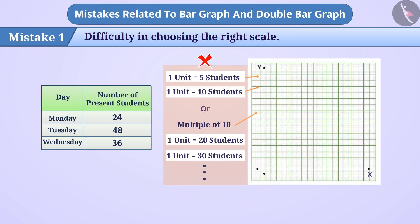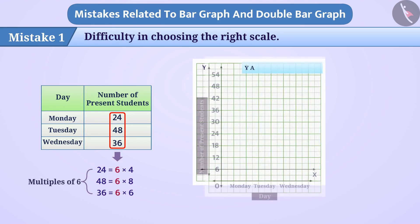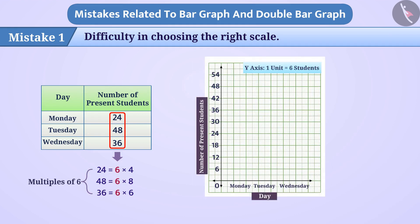Here we see if all the numbers are multiples of 6, therefore it will take 1 unit is equal to 6 students. Then it will be very easy to draw the bar graph.